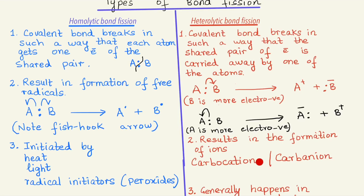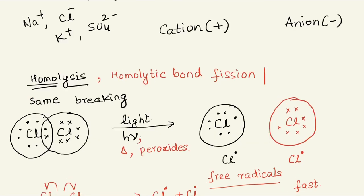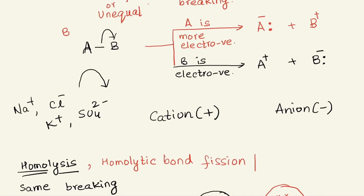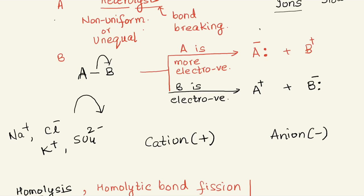Homolytic bond fission results in the formation of free radicals, whereas heterolytic bond fission results in the formation of ions. I've introduced the terms carbocation and carbanion here, which will be the topic of discussion in the next video. When heterolytic bond fission forms an intermediate where carbon carries a negative charge, that's a carbanion. If carbon carries a positive charge — for example CH3⁺ — that intermediate is a carbocation.